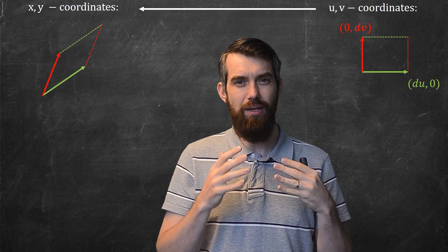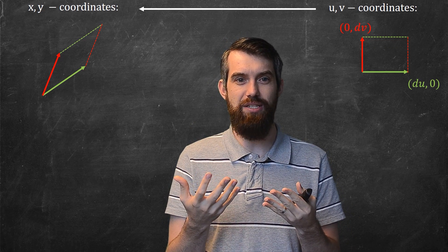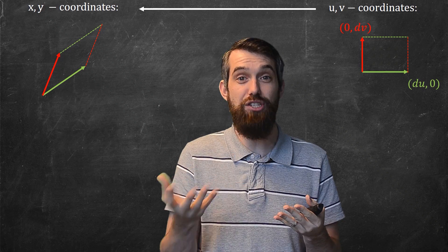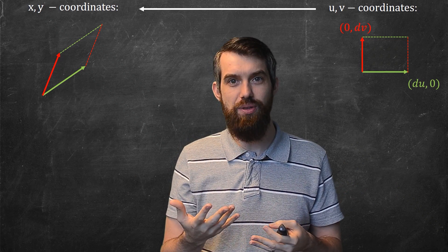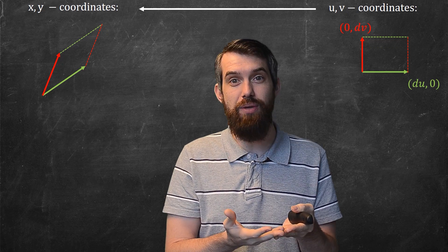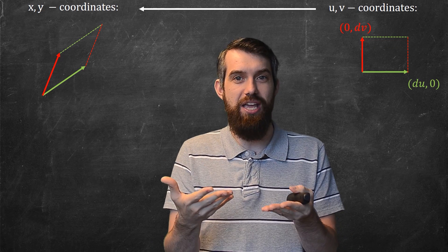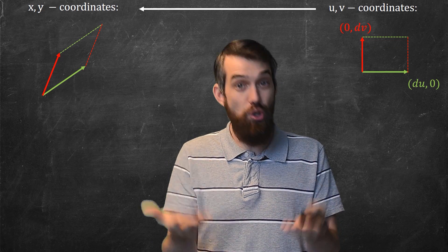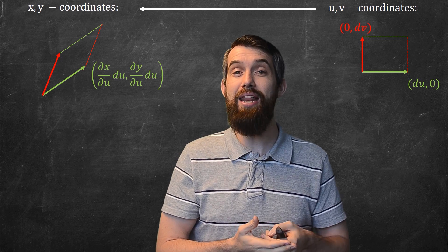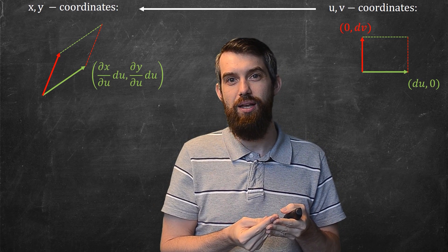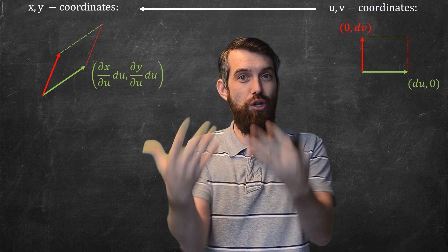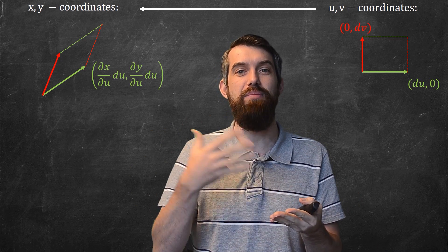But where do they end up? Well, if you think of the green vector as the result of just first a small nudge in u and then you transform it into x and y, then the result you get, what change in x do you get? It's the resulting change from nudging the u a little bit. In other words, what you get is a change in x with respect to u times that little distance du. And likewise for y, it's the partial of y with respect to u times du. So these are the little nudges in the x and the y direction that result from nudging u a little bit.